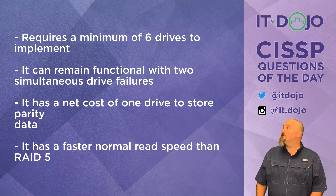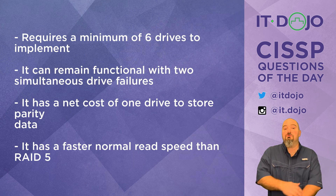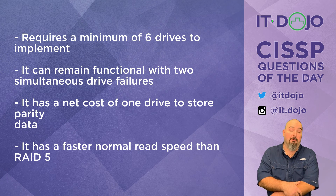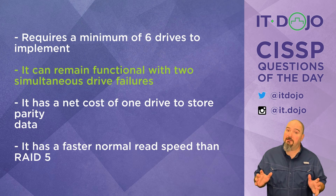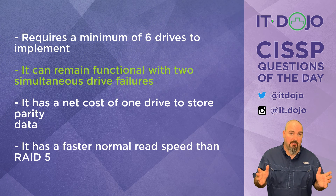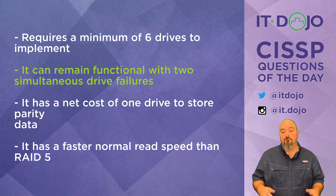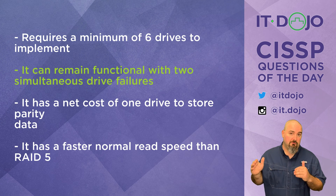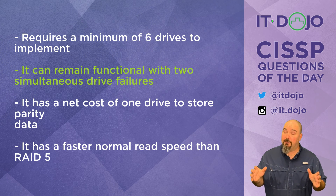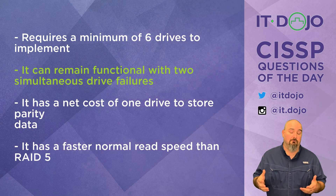Answer choice number two says that if you're using RAID 6, you can have two simultaneous drive failures. Yes — that's one of the big shiny things about RAID 6 that makes it so interesting. RAID 1 and RAID 5 can't do that, but RAID 6 can. So if you have two drives fail at the same time, a RAID 6 array will stay running. If a third drive fails, you'd better have good backups, but with two failures it'll still work.